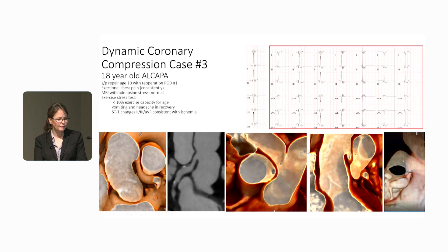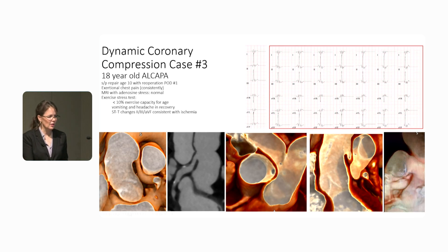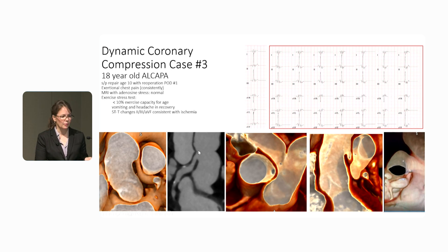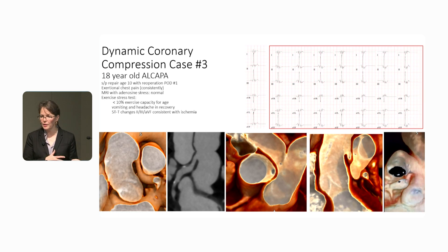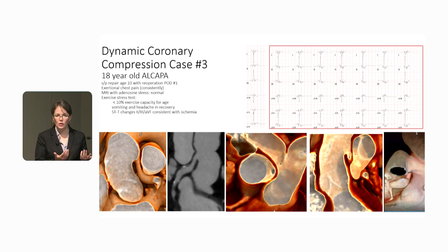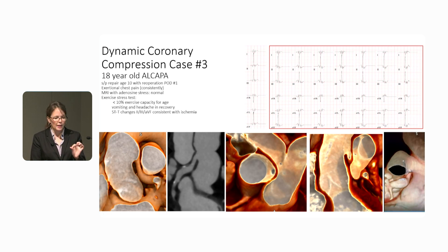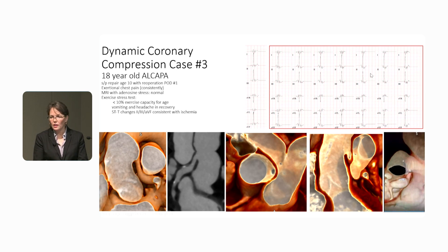Another case: an 18-year-old with ALCAPA — anomalous left coronary from the pulmonary artery. The surgical site is gorgeous, the coronary is wide open, but you can see the coronary is between the aorta and the pulmonary artery. Just as we discuss for AAOCA where an inter-arterial course is at risk for sudden death, we're actually creating an inter-arterial course as part of repair for some of these patients. For exertional symptoms with a history of coronary manipulation, we've started doing functional CTs to look for compression or changes in coronary artery relationships during the cardiac cycle.